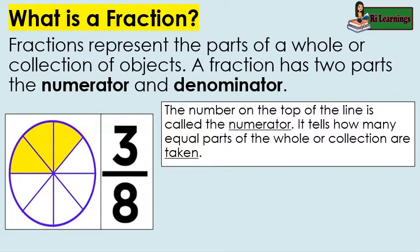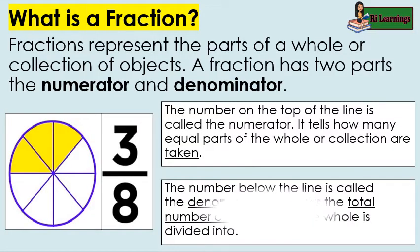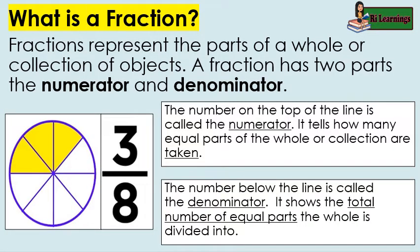The number on the top of the line is called the numerator. It tells how many equal parts of the whole or collection are taken. The number below the line is called the denominator. It shows the total number of equal parts the whole is divided into.